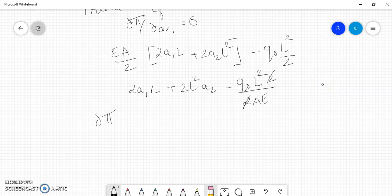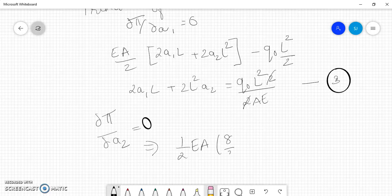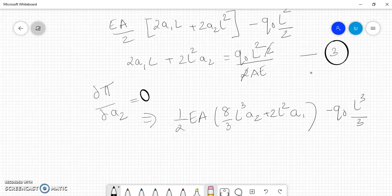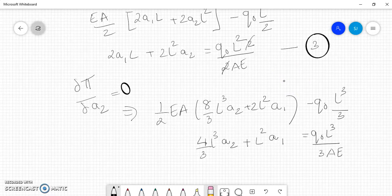Next we differentiate with respect to a2. I will call the previous equation, equation 3. Differentiating with respect to a2 also has to equal 0. I get EA/2 times (8/3 L³a2 + 2L²a1) minus Q0L³/3 equals 0. This equation can be written with the a1 term first, then the a2 term.